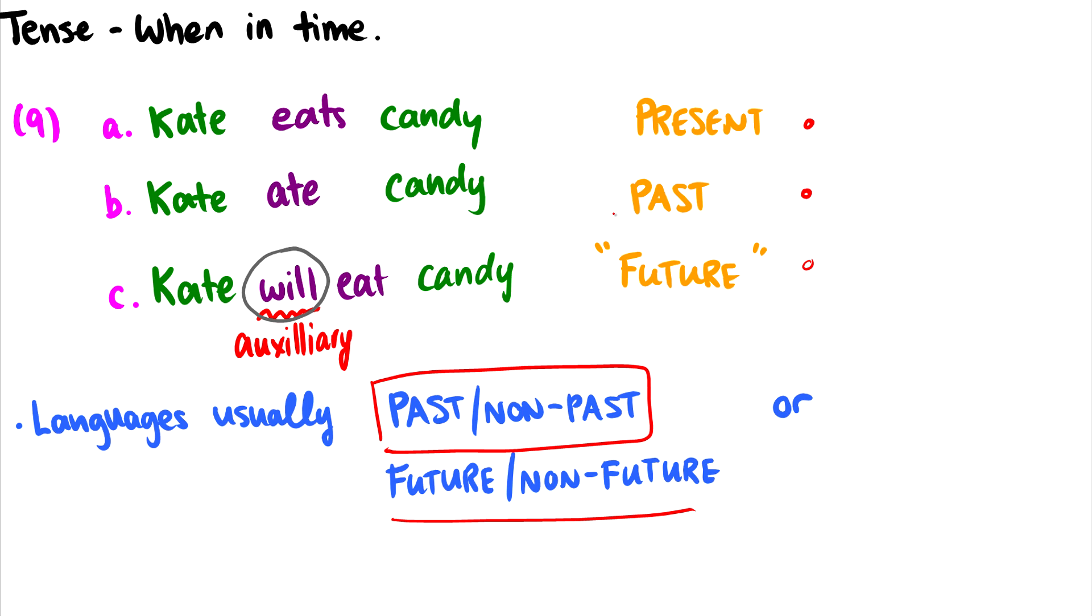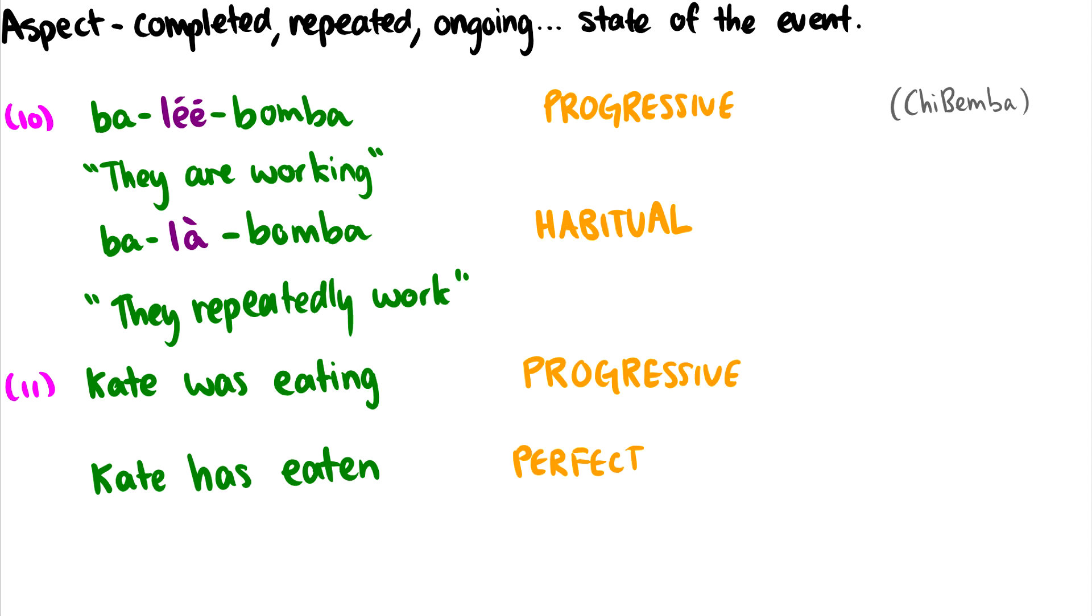One thing verbs can tell us is the tense, when in time something occurs. Another thing they can tell us is aspect. So whether an event is completed, whether it's repeated, whether it's ongoing, the state of an event. So English, if we take a look at 11 first, has progressive and perfect. So progressive means something like 'Kate was eating.' And usually we do the progressive with this -ing ending, as well as this auxiliary 'was,' or progressive 'was,' we can say. We also have the perfect, 'eaten.' So this is with the -en ending on our verbs, and it's always accompanied by some form of 'have,' whether it's past, present, or future.